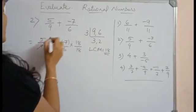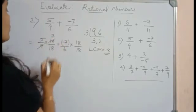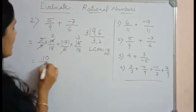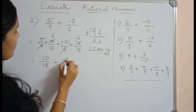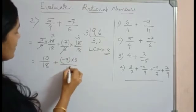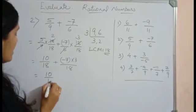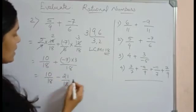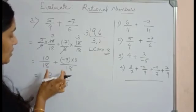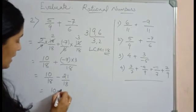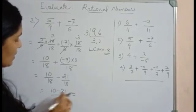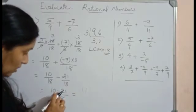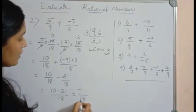So 9 and 18 cancels. You will be getting 2 here and 6 3's are 18. Now let's write it: 5 2's are 10, 10/18 + (-7 × 3)/18. That is equal to 10/18 - 21/18. Here minus into plus is minus. The denominators are same, just do the subtraction. That is 10 - 21 divided by 18. The difference between 10 and 21 is 11 and the greater number is 21. So this will be -11/18. This is your answer.